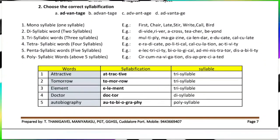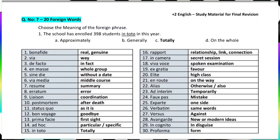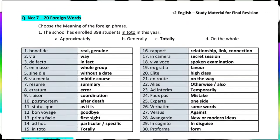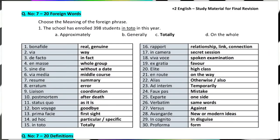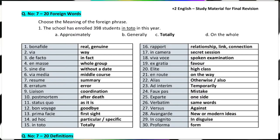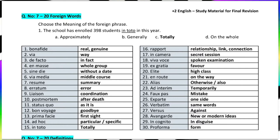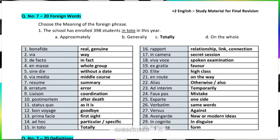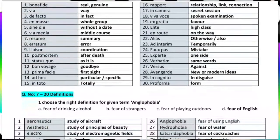Next, foreign words, then definitions. For example, 'aeronautics' is the study of aircraft, and 'psychologist' is one who studies the human mind. Then relative pronouns. This material is superb — maximum number of questions will come from this.